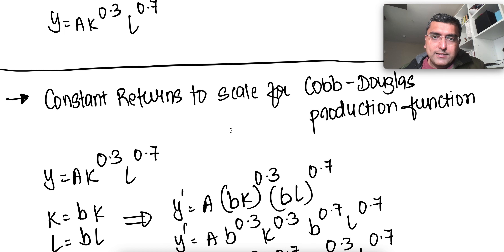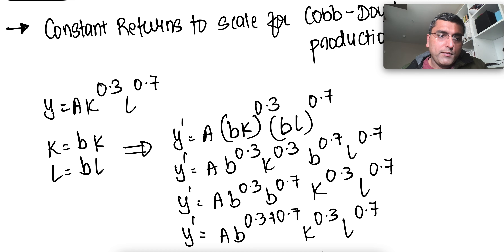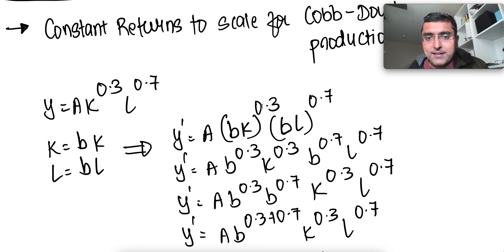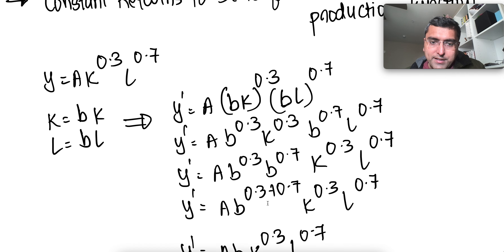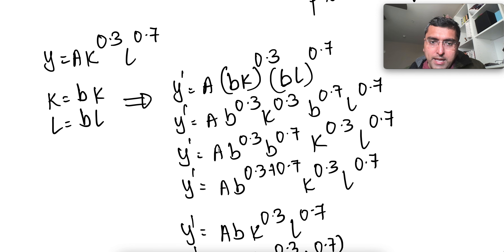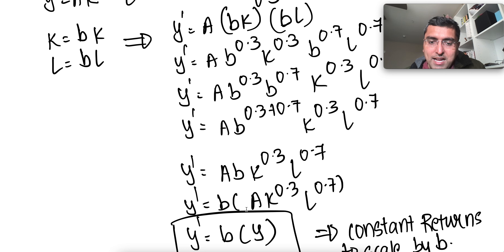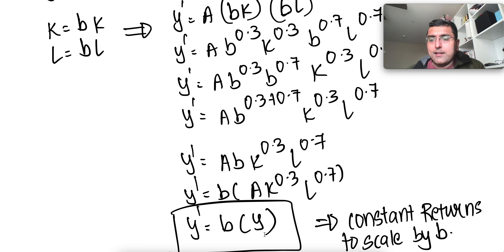Why do we say that the Cobb-Douglas function has constant returns to scale? Let's take an example where y = A · K^0.3 · L^0.7, and we increase both capital and labor by a factor of b — replacing K with bK and L with bL. Substituting, we get y' = A · (bK)^0.3 · (bL)^0.7, which factors out to b^0.3 · b^0.7 · A · K^0.3 · L^0.7 = b · y. So y' equals b times y, which proves the function has constant returns to scale.